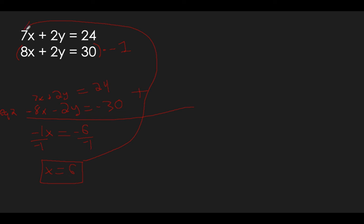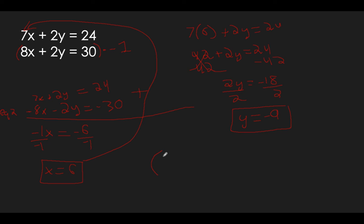Now we need to plug this back in for x. We can use equation 1, 2, or the new equation 2 — it doesn't matter. I like equation 1. Plug in 6 for x: 7 times 6 plus 2y equals 24. 7 times 6 is 42, so 42 plus 2y equals 24. Subtract 42 over: 2y equals negative 18. Divide by 2: y equals negative 9. We have our x and our y — the ordered pair is (6, negative 9).